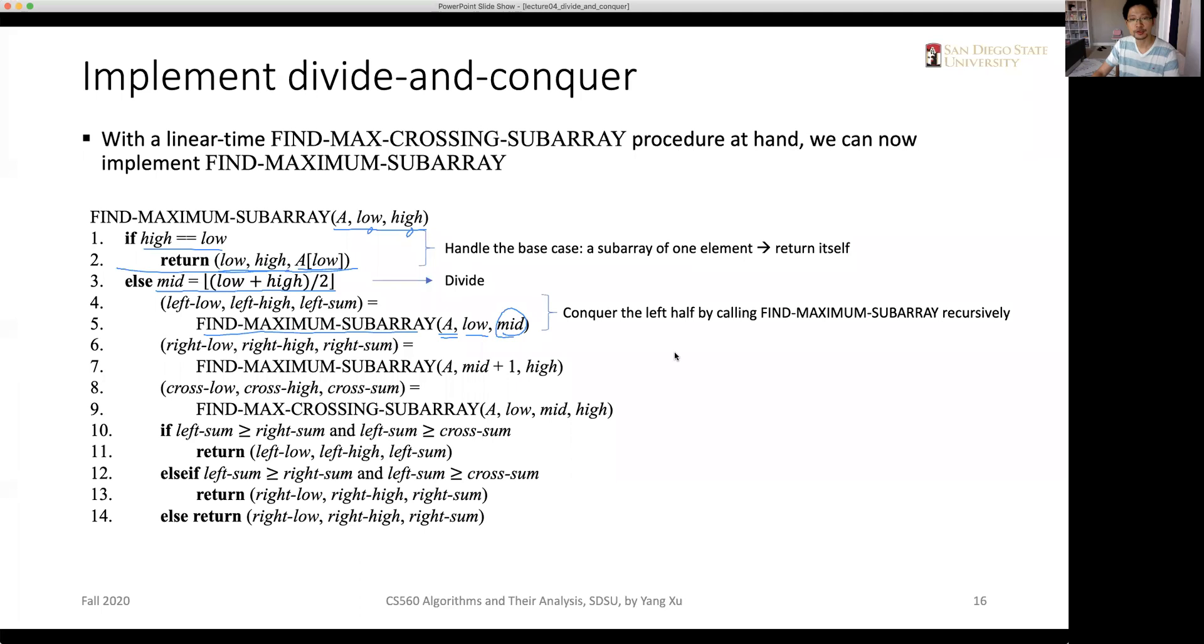Then in the next two lines of code, we conquer the right half by calling the procedure recursively on the right procedure with mid plus one as the starting index and high as the ending index.